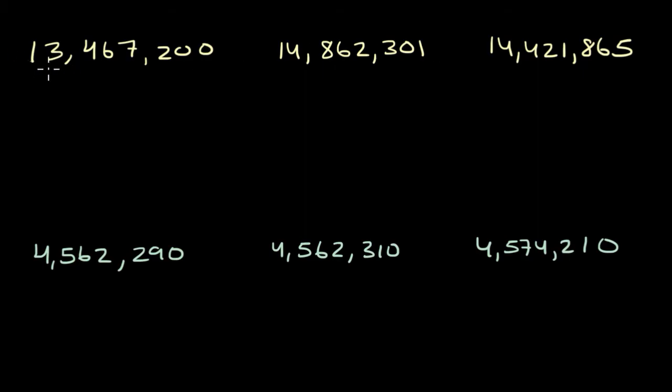Now this isn't 3 million, this is 13 million. So let's start in the 10 millions place, and we have one 10 million in every situation. So those are looking similar. Then we could go to the millions place. We have a 3, a 4, and a 4.